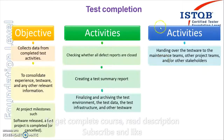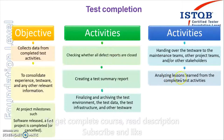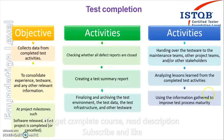Then, analyzing the lessons learned from the completed test activity. Whatever activities we did, if we have learned anything, we have to document that so that when the next cycle starts or the next project comes, we will not repeat those mistakes or we will do it in a better way. The other activity is using the information gathered to improve test process maturity — if we see there was some flaw in the test process or during planning we had not considered certain things, all those things we can include as part of the test learning phase.